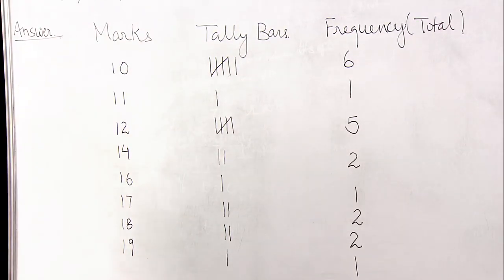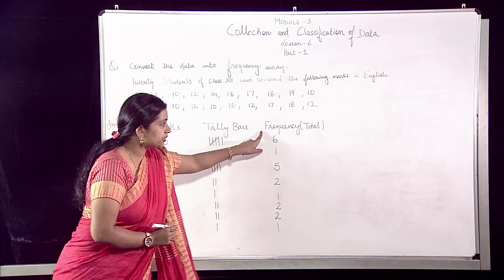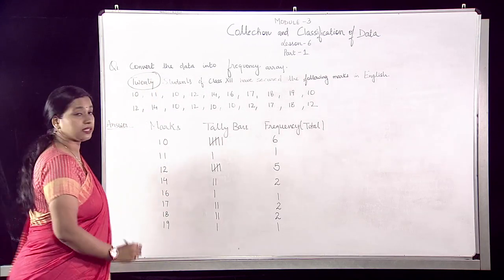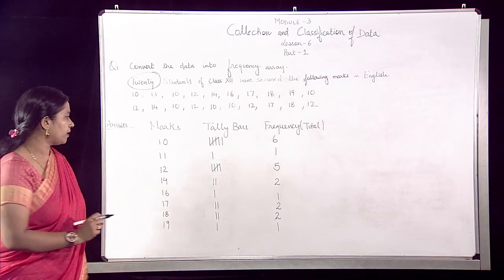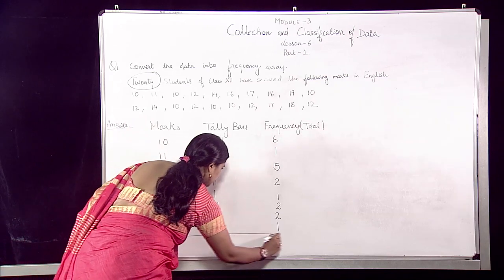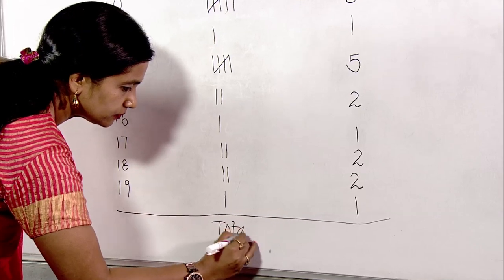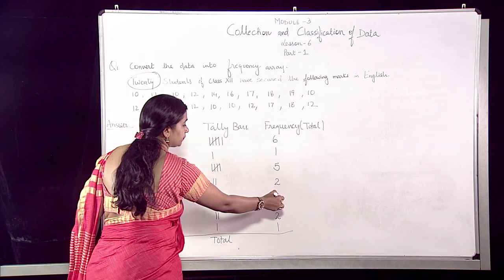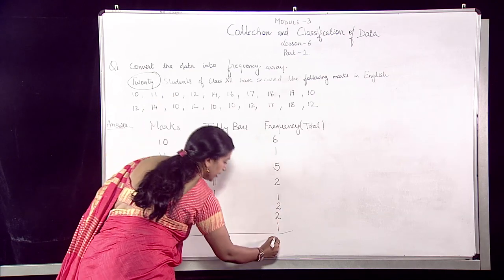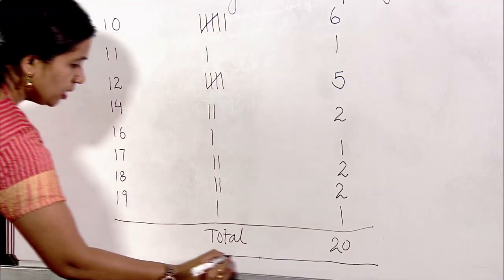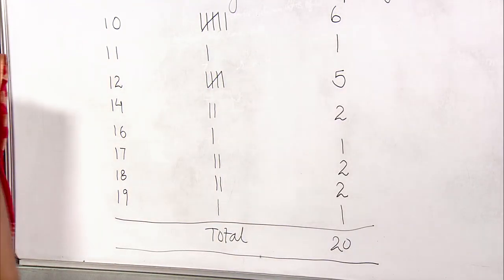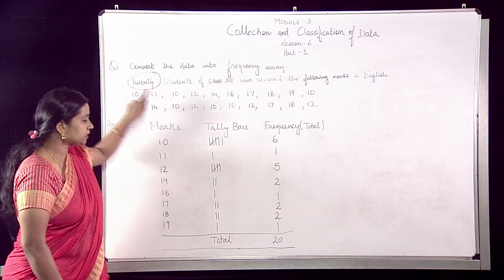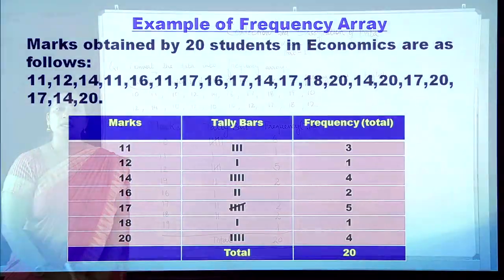Once the table is constructed, we cross-check: the total frequency must equal the total number of students, that is 20. Adding up: 6 + 1 + 5 + 2 + 1 + 2 + 2 + 1 = 20. This confirms we have not missed any value. So we have successfully constructed the frequency array.